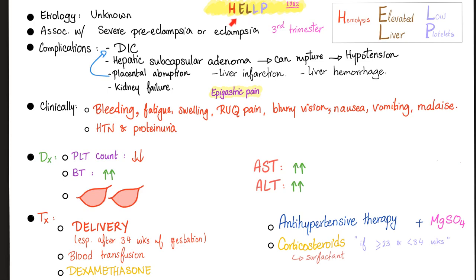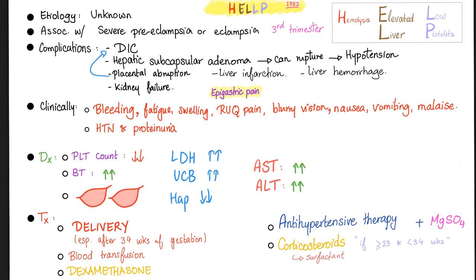Diagnosis — the name has the answer. Hemolysis: you'll see schistocytes, elevated LDH, elevated unconjugated bilirubin, but low haptoglobin. Elevated liver enzymes: ALT and AST are high. Low platelets: and therefore prolonged bleeding time.